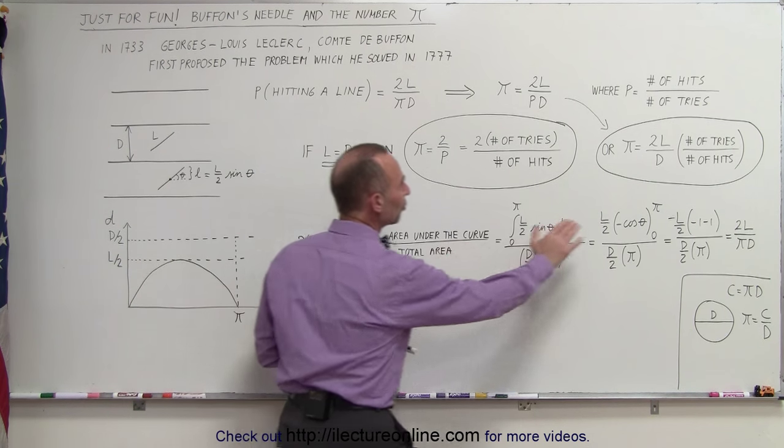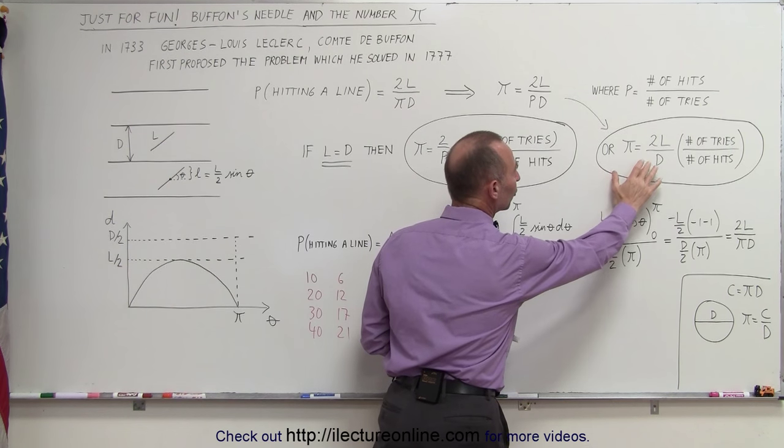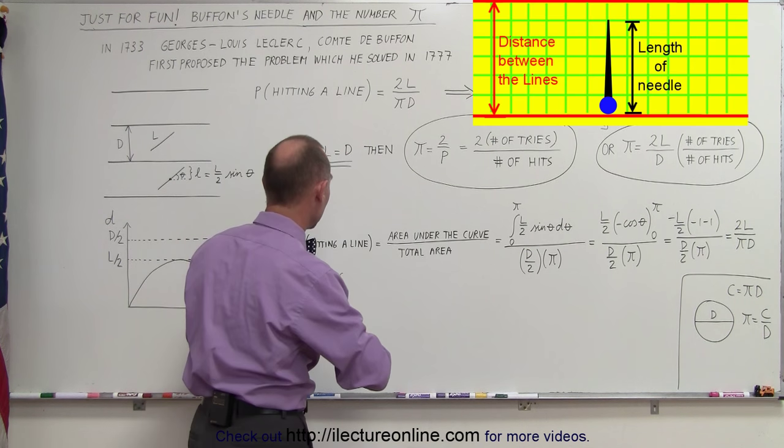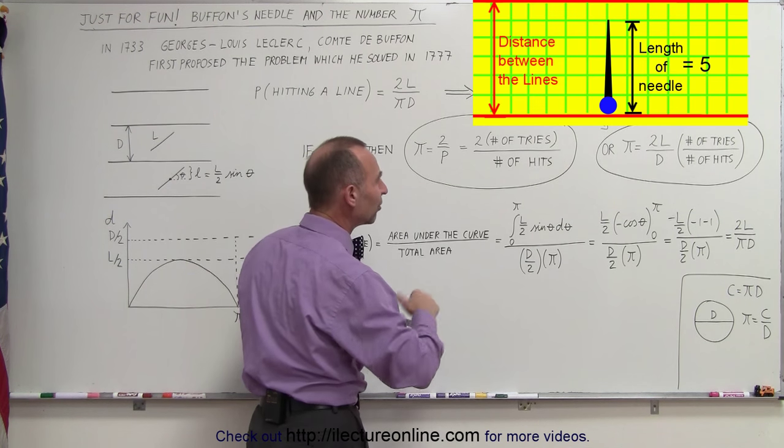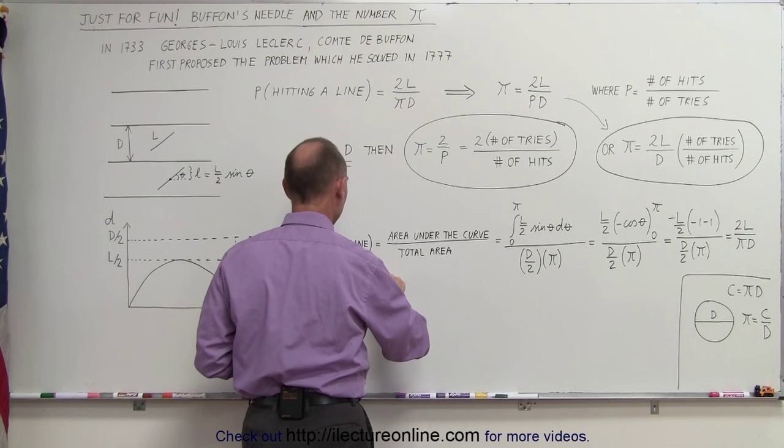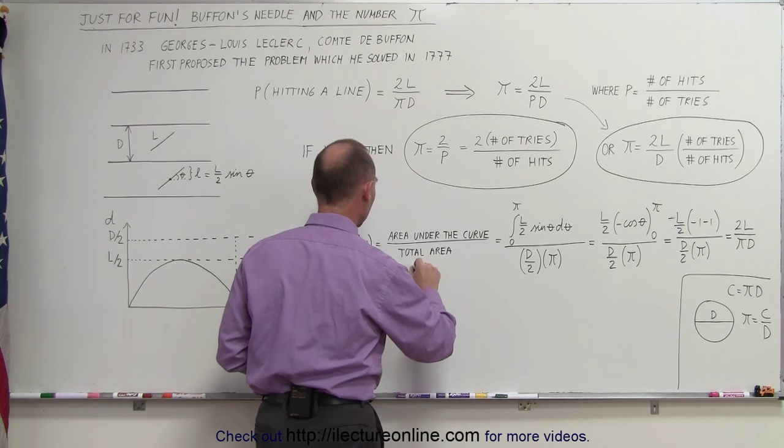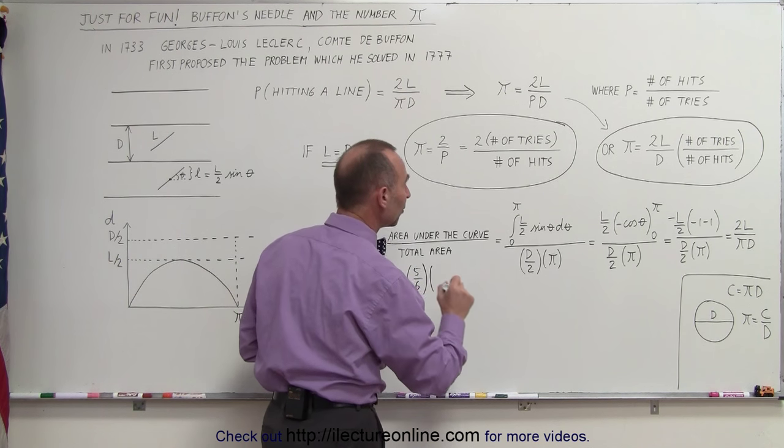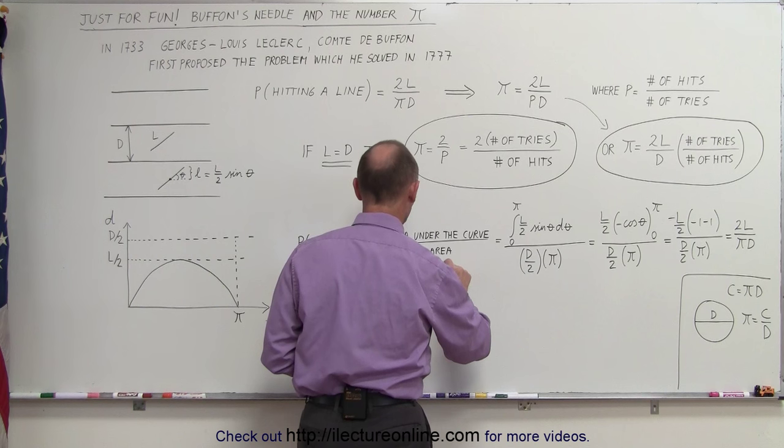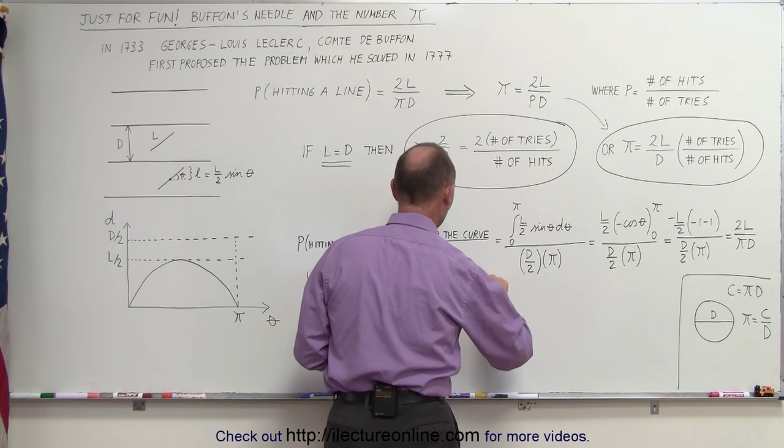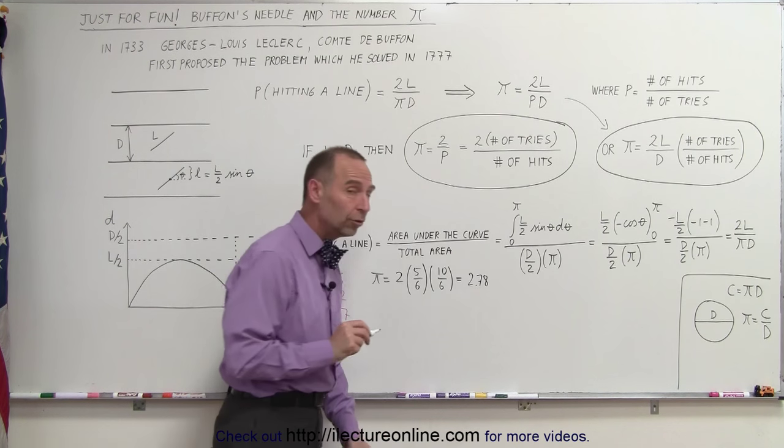Of course, we're going to have to use this equation right here, because the length of the needles was not equal to the distance between. It was a ratio of 5 to 6. So pi is equal to 2 times the length over the distance, that would be 5 divided by 6, multiply times the number of tries divided by the number of hits. We have 10 needles and we have 6 hits. So that's equal to 2.78. Not a bad result.